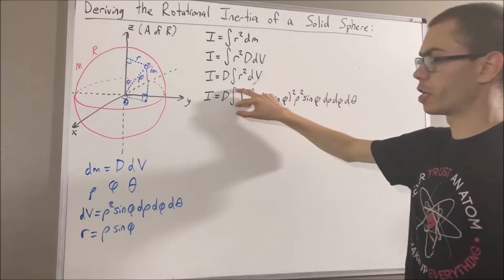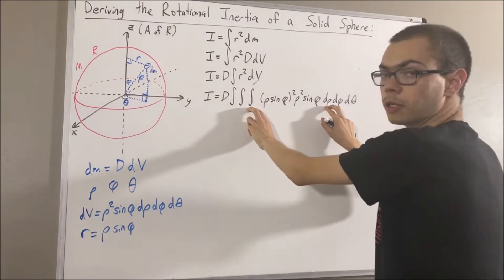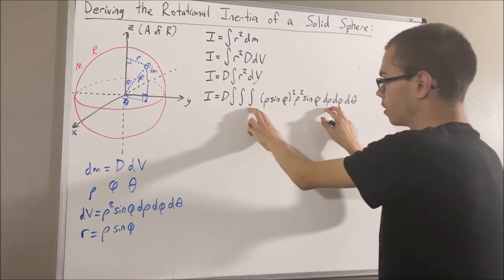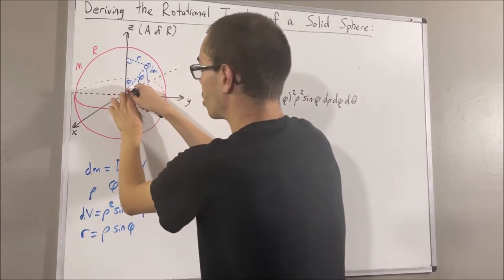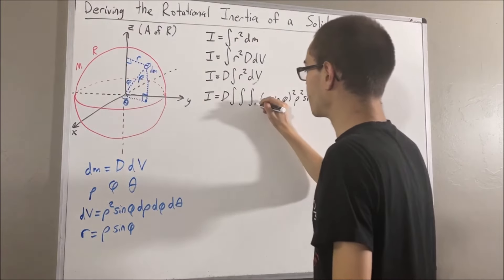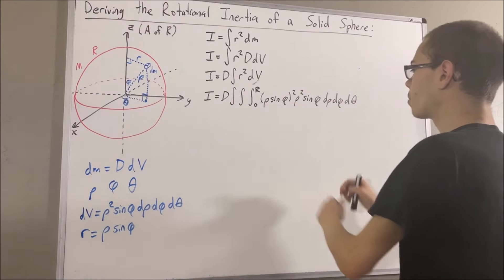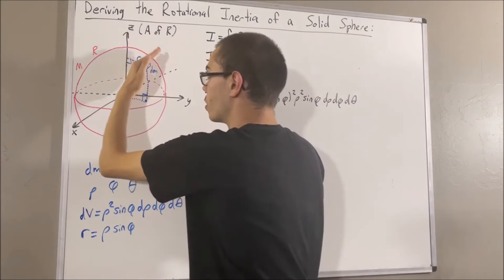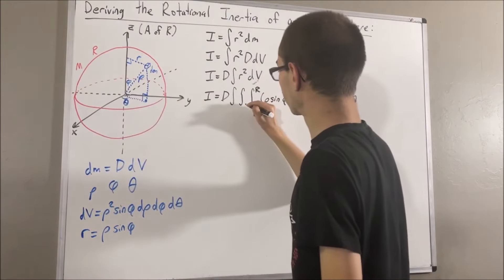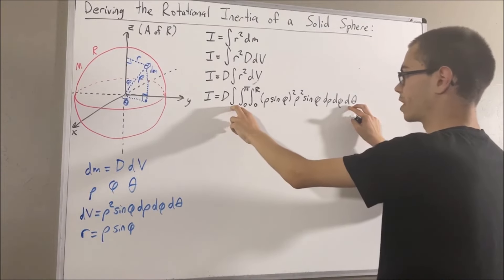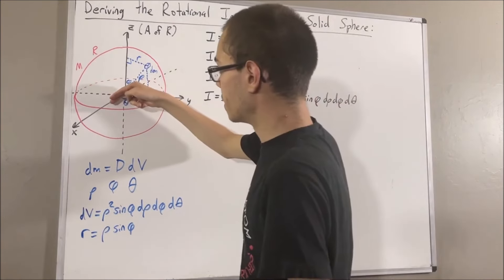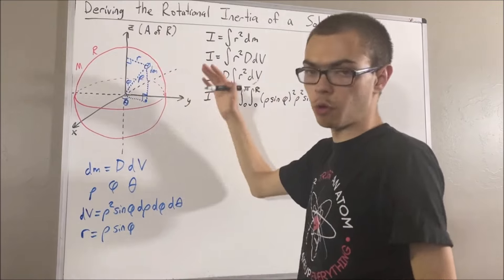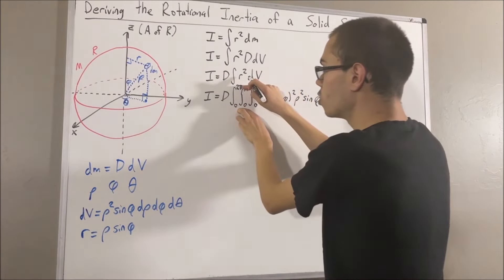So this is what we get, but we still have to figure out our bounds of integration. This integral refers to d rho, this one to d phi, and this one to d theta. Our solid sphere ranges from a radius of 0 to capital R, so we integrate rho from 0 to R. For phi, we integrate from 0 to pi radians from the positive z-axis. For theta, we integrate from 0 to 2 pi, moving counterclockwise through a full circle. These bounds of integration will cover our entire sphere.